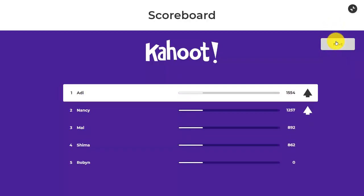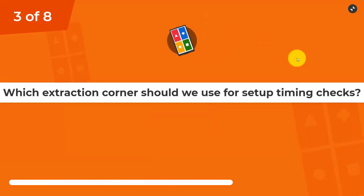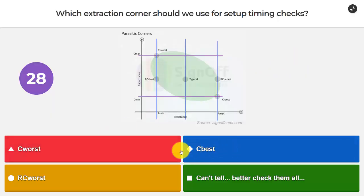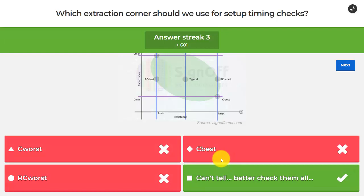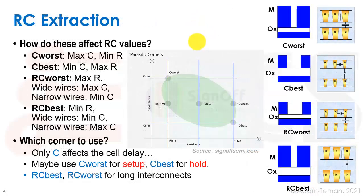Question number three: which extraction corner should we use for setup timing checks? C-worst? C-best? RC-worst? Or can't tell — better check them all? Here we have a graph showing resistance on one axis and capacitance on the other, with C-best, RC-worst, typical, RC-best, and C-worst regions shown. I can't tell — better check them all.